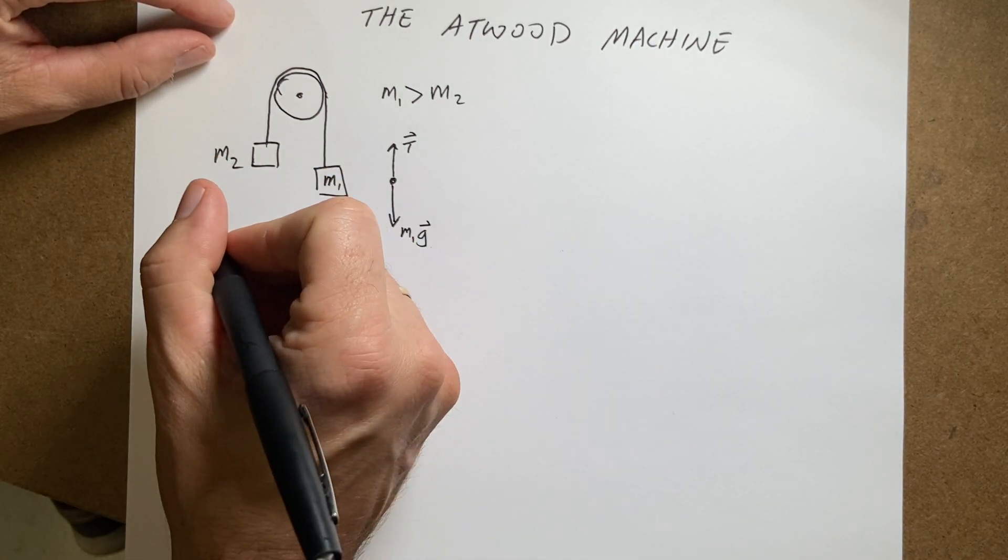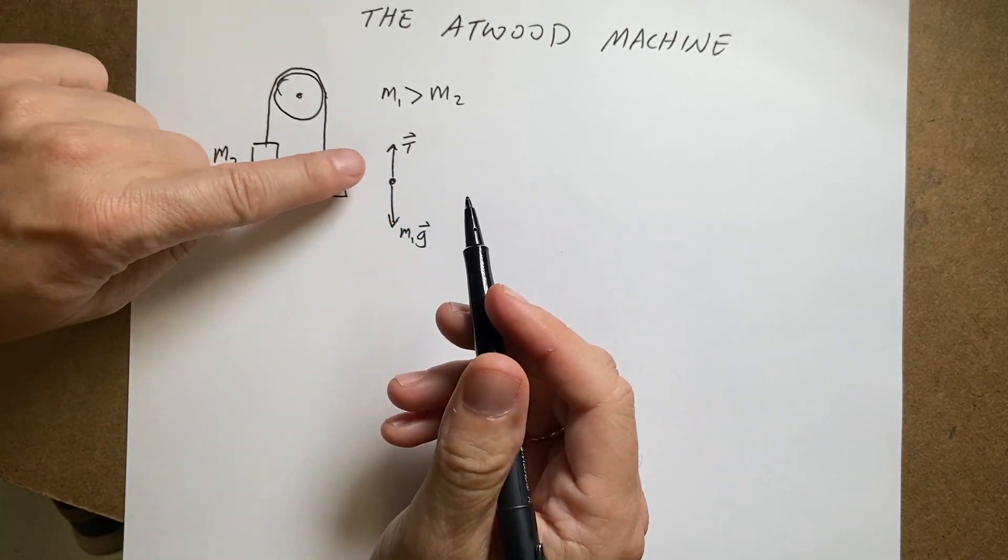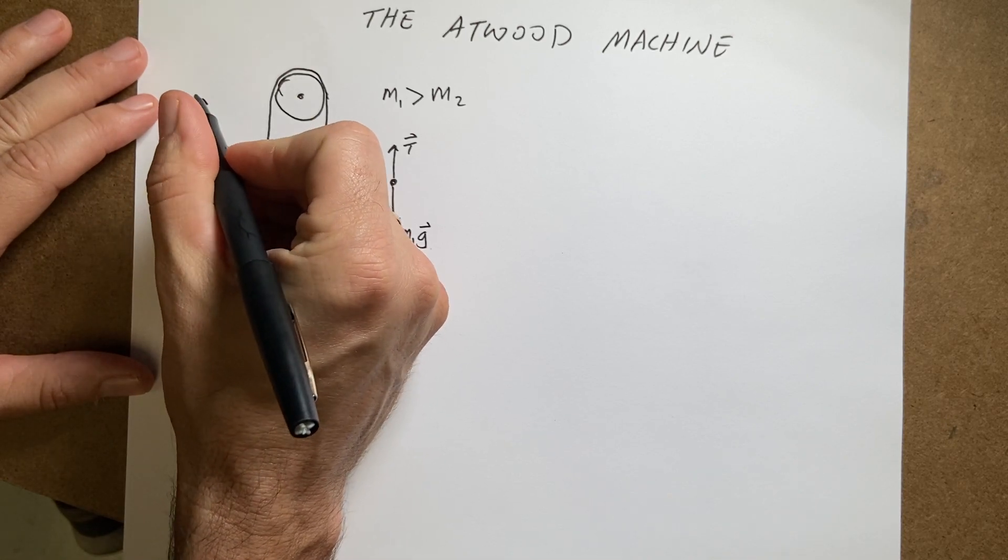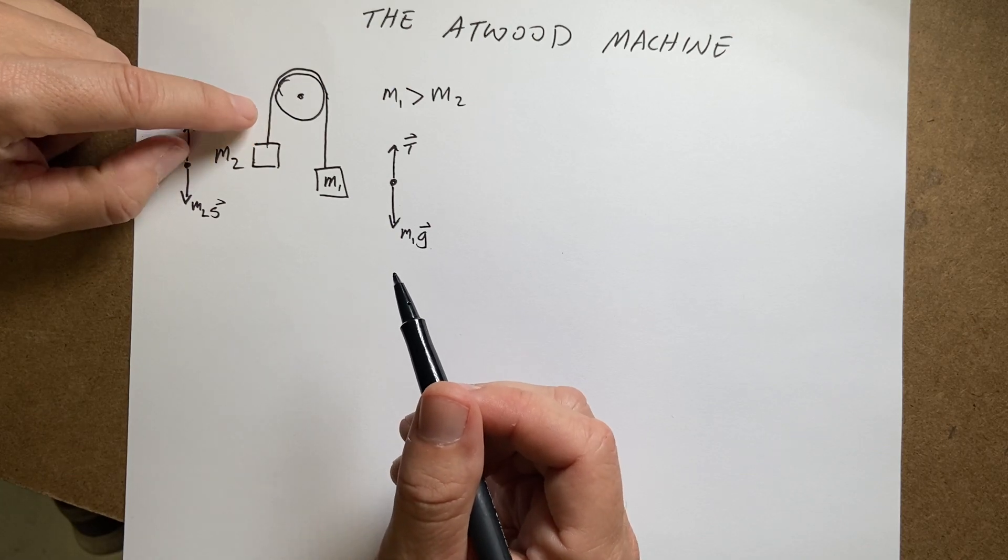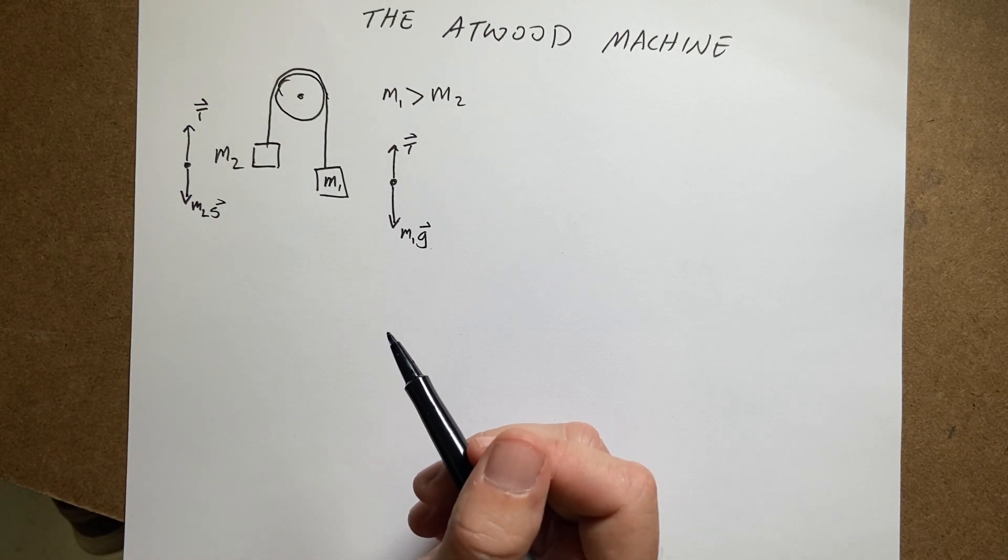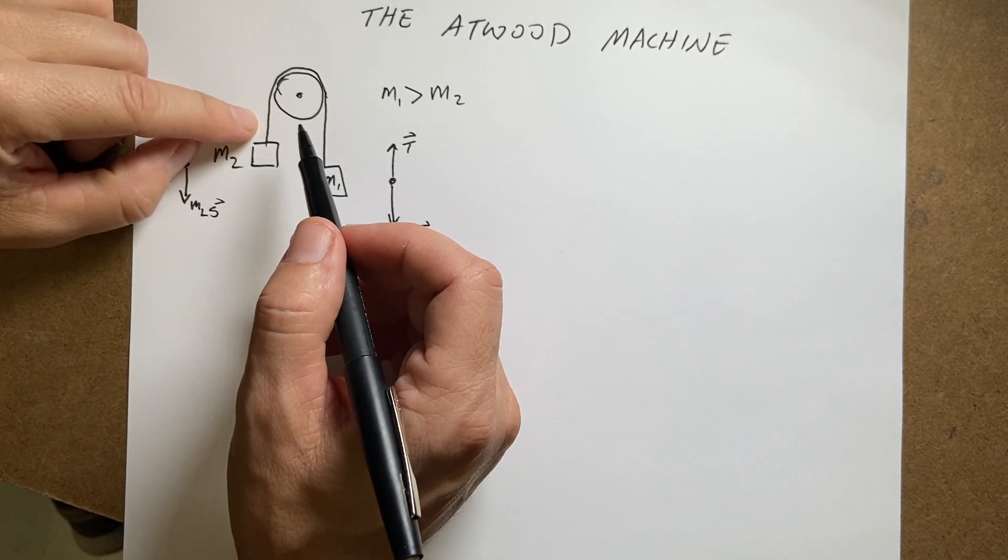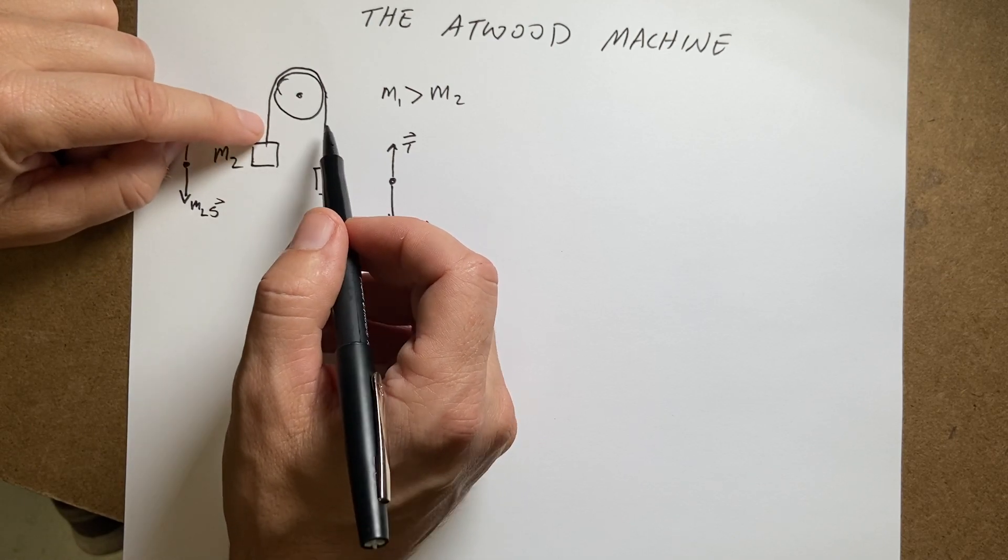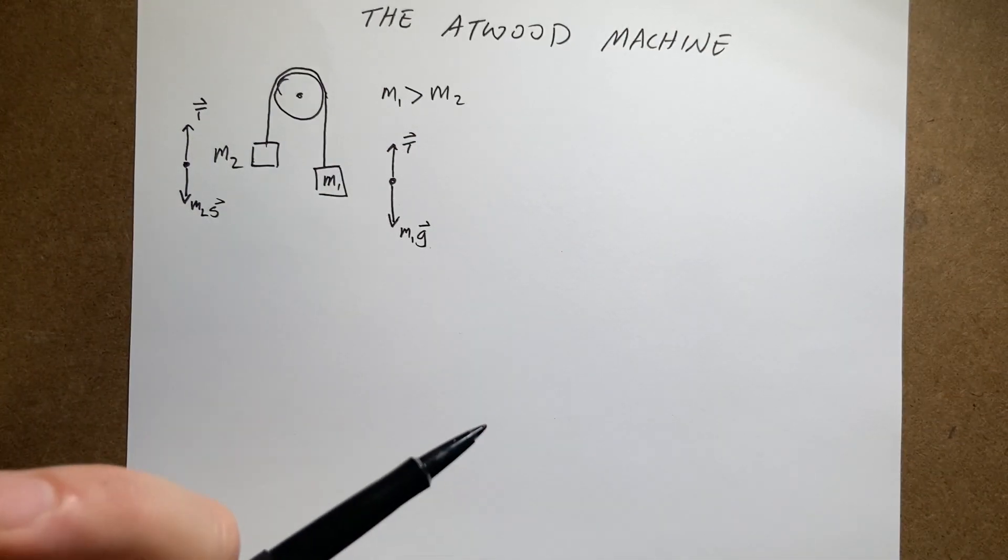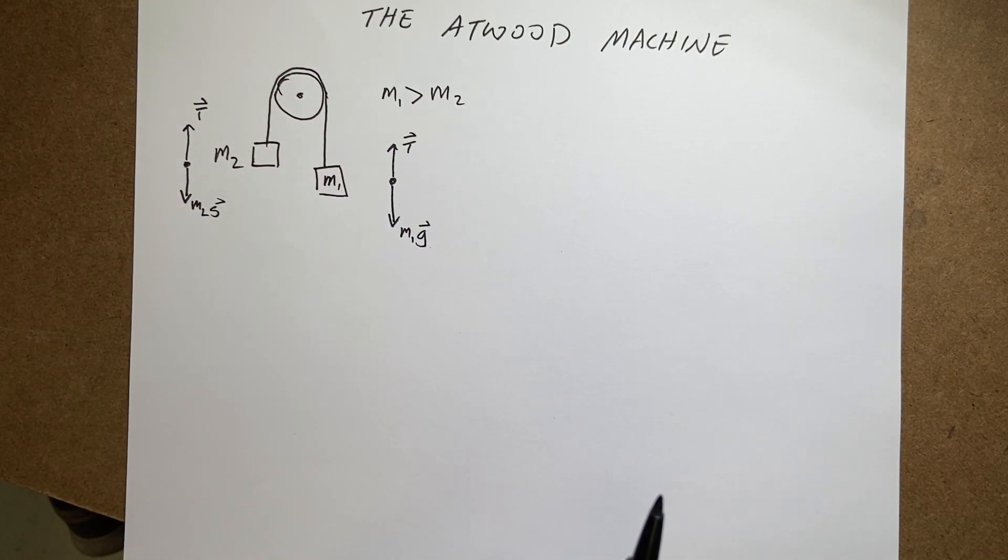If I go over here to mass two, it looks like this. I'm going to draw a smaller weight because it has a lower mass. Now, it should have the same tension pulling up. Why? Well, this is the same string. If you have a string and you pull on it, since the string has very, very low mass, the tension on one side has to be equal to the tension on the other side. The tension throughout the whole string is the same. Now, the direction can change because the tension is always in the direction of the string. So in this case, the string is pulling up. In this case, this string is pulling up too.